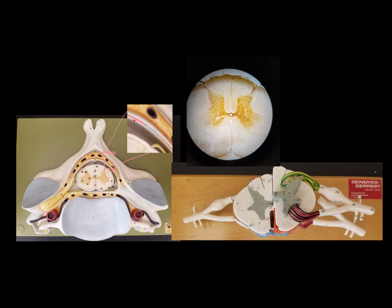Let's go back to a question a lot of students have: arachnoid. Most people are familiar with that word — it means something to do with spiders. If we look at this area closely, if this were a real brain or spine, it's got some webbing that connects it to the underlying tissue, the pia mater. That webbing gives it something like a spider web appearance, so that's how it got its name.